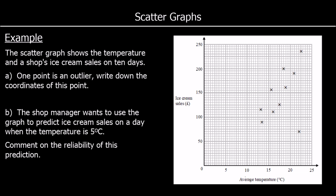Here's another example. This time we've got temperature and ice cream sales, where each cross represents a different day, and there are 10 days shown in the diagram. It says one point is an outlier — write down the coordinates of this point. So which point does not fit the correlation, which point looks out of place? We can see a positive correlation, and you could draw a line of best fit for these nine points. One point doesn't fit with the correlation — it's a long way away from the line of best fit, so it is an outlier.